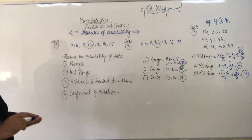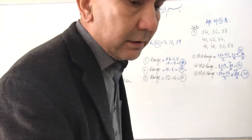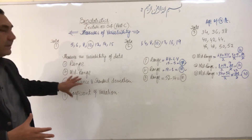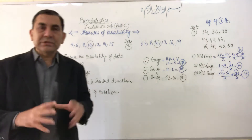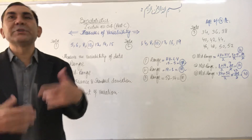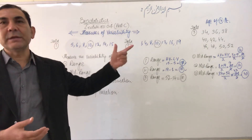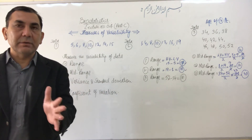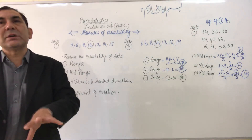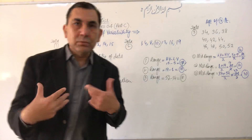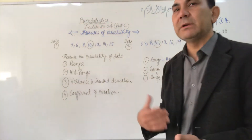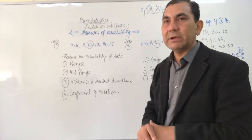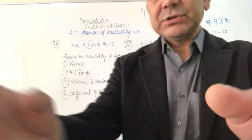We have learned the easiest ways to calculate variability of data using the range and the mid-range. These two methods allow us to measure variability and determine in which data more variance is present. We will stop here, and the variance and coefficient of variation we will learn in the next lecture. Thank you.